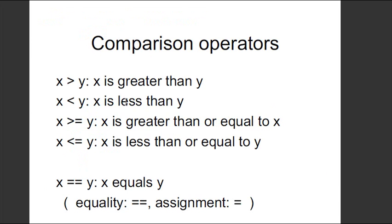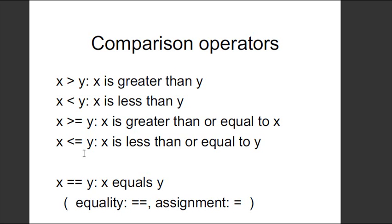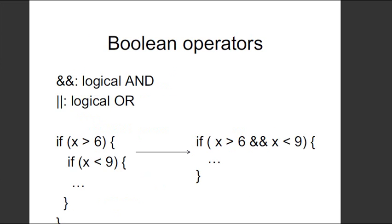You've seen all of these before in PHP — greater than, less than, greater than or equal, and less than or equal. The one thing you need to worry about — beginning programmers make this mistake, and I used to as well — is that in a conditional you don't use a single equal sign, because that's an assignment operator. You use a double equal sign to check if a value equals something.